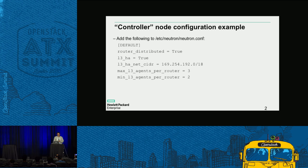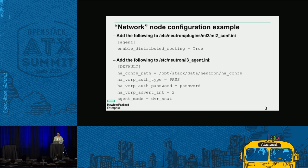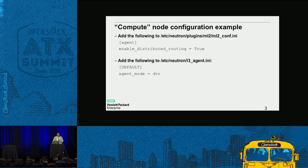For controller configuration in neutron.conf: turn on router_distributed and l3_ha, specify the CIDR for HA networks, and configure max and minimum agents hosting the HA router. For ML2 configuration, turn on routing. For the L3 agent on the controller or network node, set agent_mode to dvr_snat. On the compute node, set agent_mode to dvr. VRRP configurations also apply.